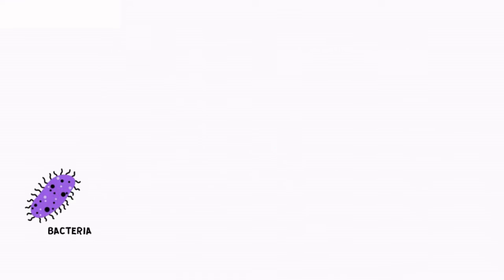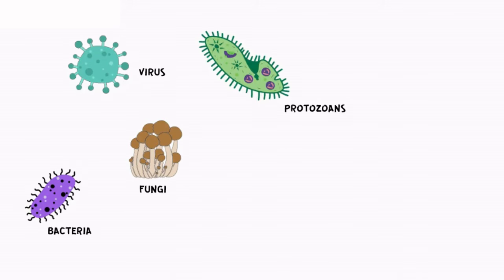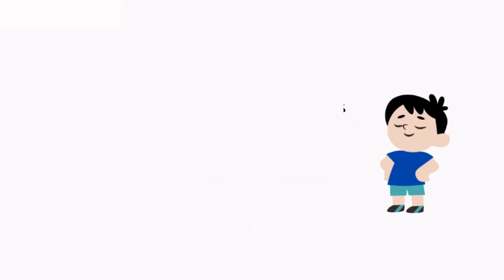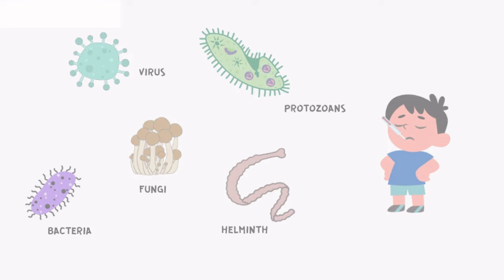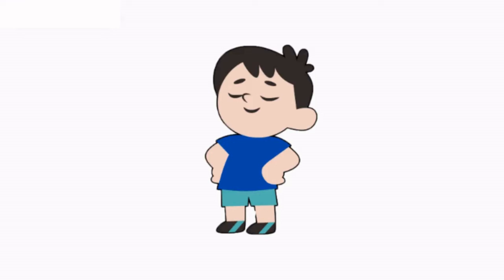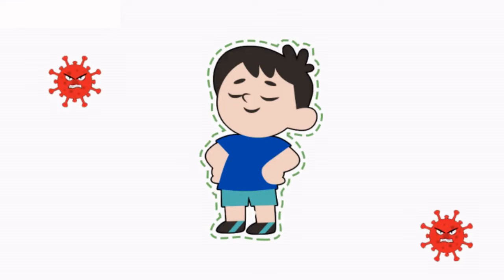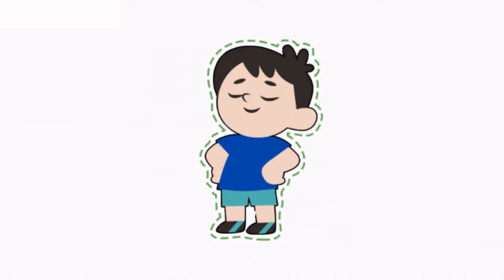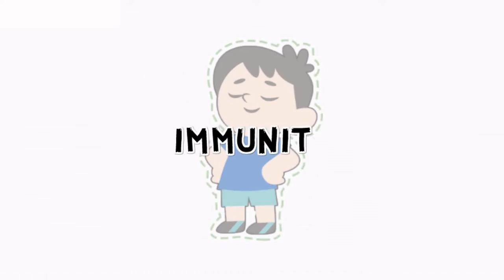A wide range of organisms belonging to bacteria, viruses, fungi, protozoans, helminths, etc. could cause diseases in a man. Such disease-causing organisms are called pathogens, and the overall ability of the host to fight against these disease-causing organisms, conferred by the immune system, is called immunity.